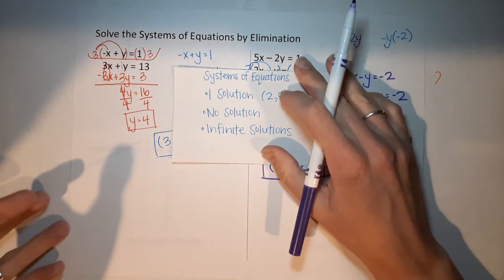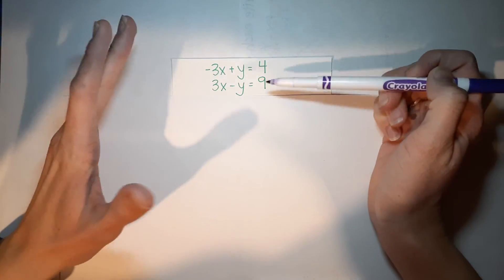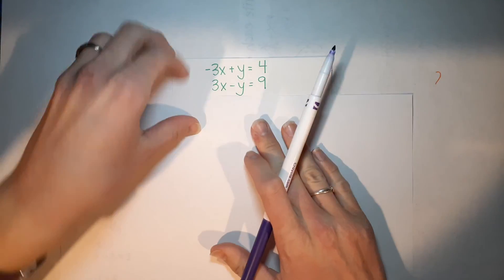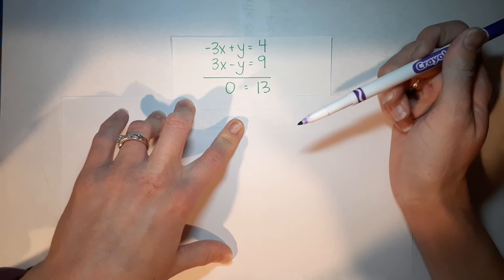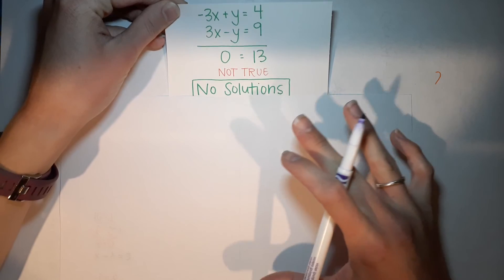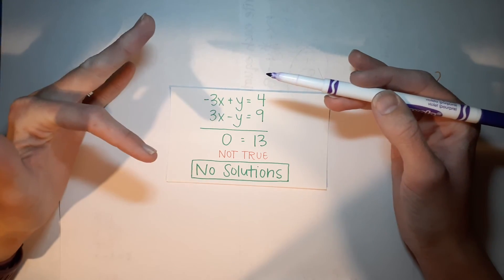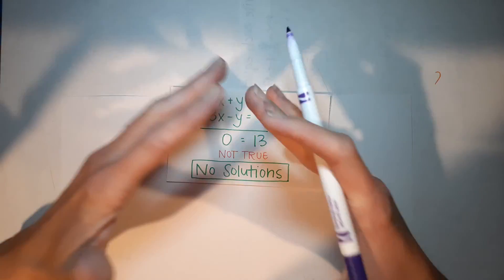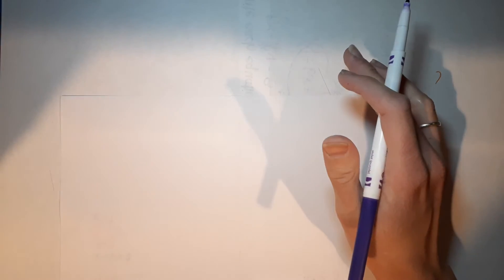Now let's look at no solution and infinite solutions. For no solution: say you multiply one equation to get your x's to cancel — but then your y also cancels without you trying. You're left with zero on the left and 13 on the right. Does zero equal 13? No. So there is no solution — no numbers you can plug in for x and y that will work for both equations. If you graphed these, they would be parallel lines that never cross.